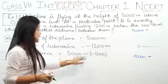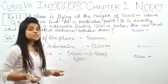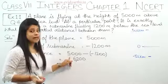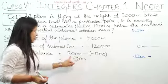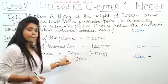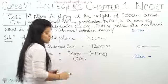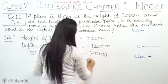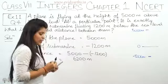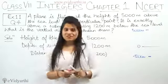Here we can see what the sign is. The sign with 5000 is positive. So this will be 6200 meters. The distance is 6200 meters.